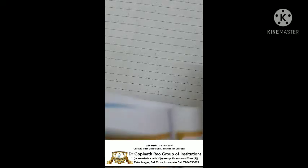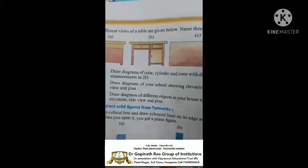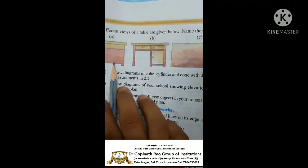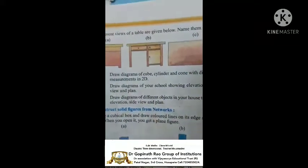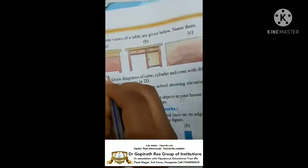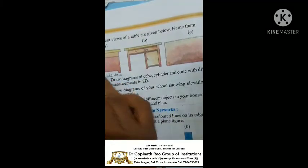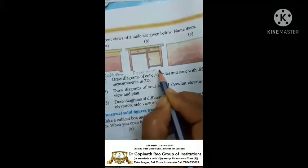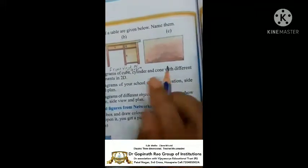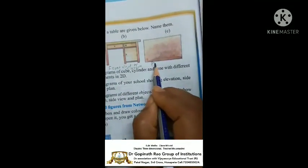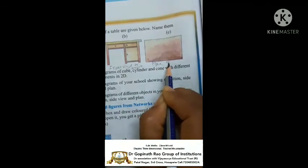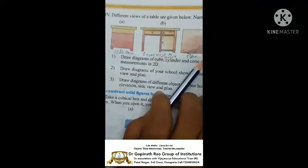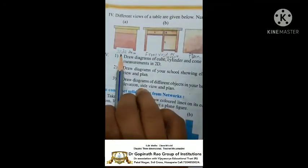Next, fourth one: different views of a table are given below — name them. Here these are all one table. What is the side view, what is the top view, what is the front view? First one: side view. You observe the table — evaluation means front view; last one is plane means top view. This is the top view, this is the front view, this is the side view.